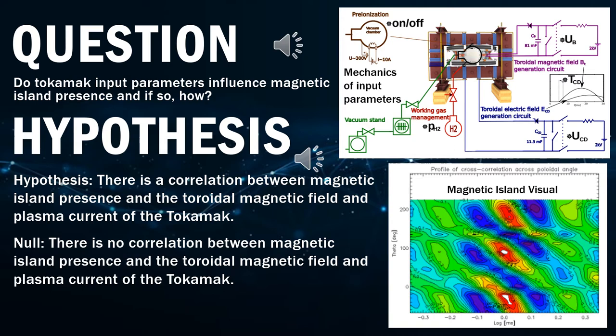The big question of our research is, how do tokamak input parameters influence magnetic island presence? Our hypothesis is that there is a correlation between the magnetic island presence and the toroidal magnetic field and plasma current of the tokamak. Our null hypothesis is that there is no correlation between these three values.